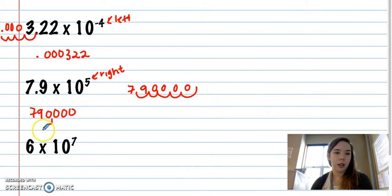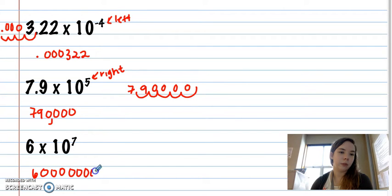6 times 10 to the 7th. Since there's only one digit, it will be 7 0's. So 60 million. So really the big difference here is the 9 takes up 1 of your 0's. So then you only have 4.